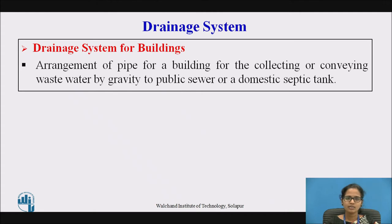The drainage system is an entire system of pipelines which is laid for providing the water supply to the buildings. It is also called as an arrangement of pipes for a building for collecting or conveying the waste water by gravity to the public sewer or a domestic septic tank.